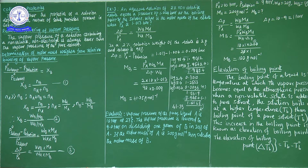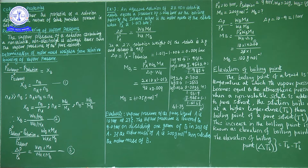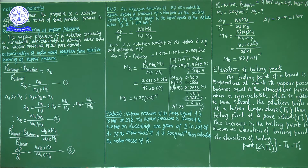There are four colligative properties which depend on the number of particles present in the solution. The four colligative properties are: relative lowering of vapor pressure, depression in freezing point, elevation of boiling point, and osmotic pressure. These properties do not depend on the nature of the solute particles. Colligative properties play an important role in many experimental conditions, especially osmotic pressure in biological experiments.